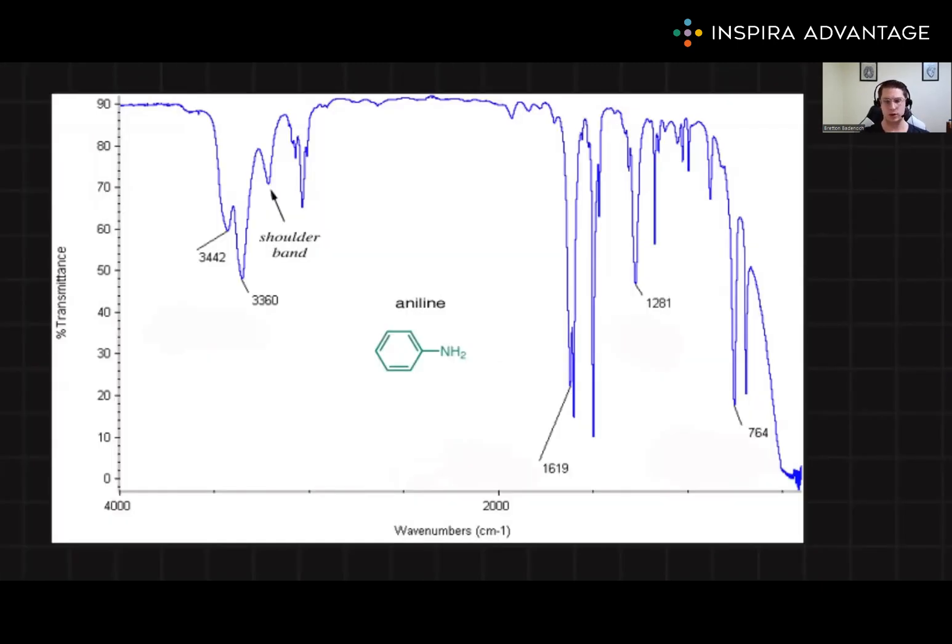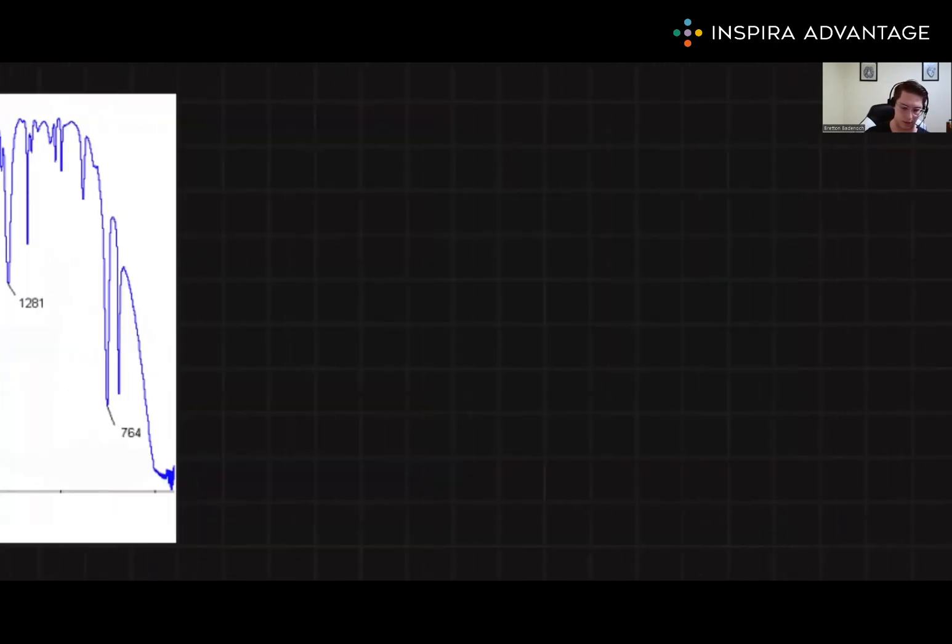Now, let's take a step away from oxygen and talk about amines. The MCAT loves testing the difference between primary and secondary amines. The naming convention, primary, secondary, and tertiary, refers to how many carbons are on the amine.